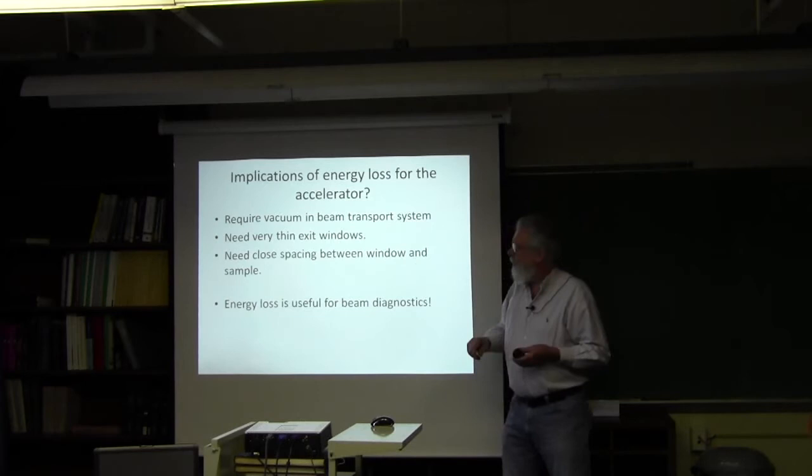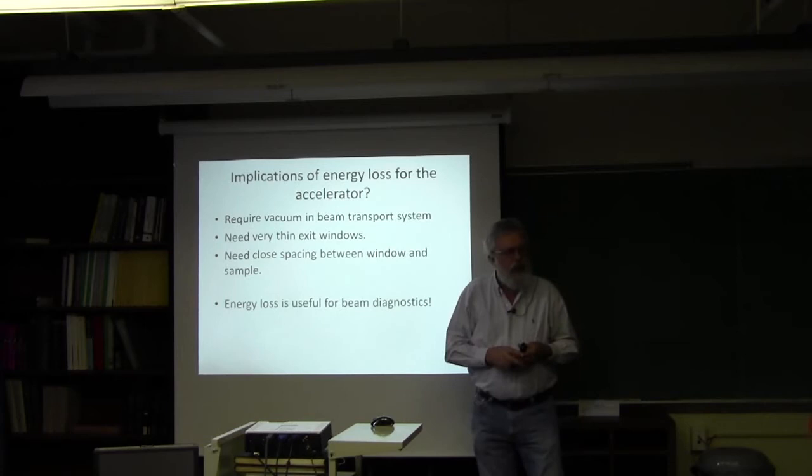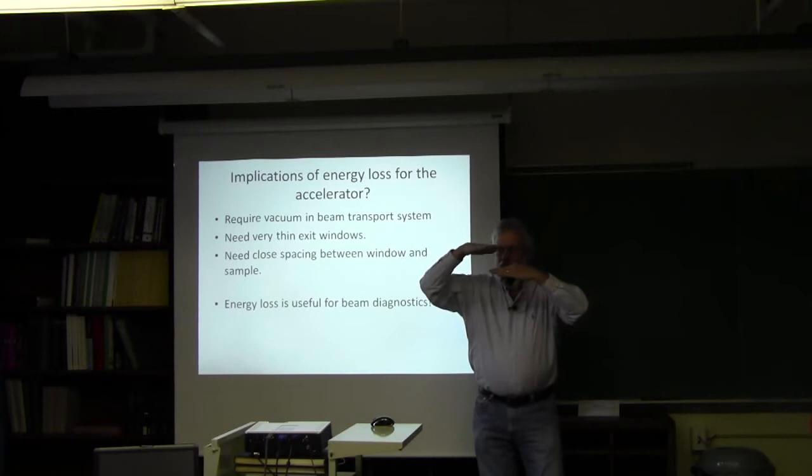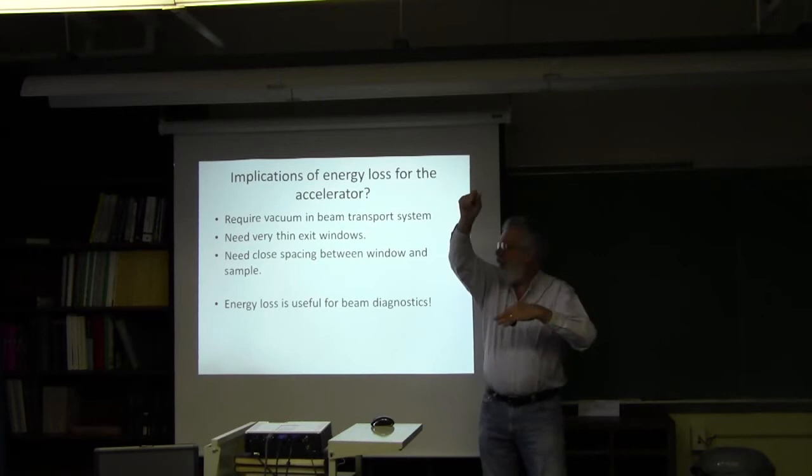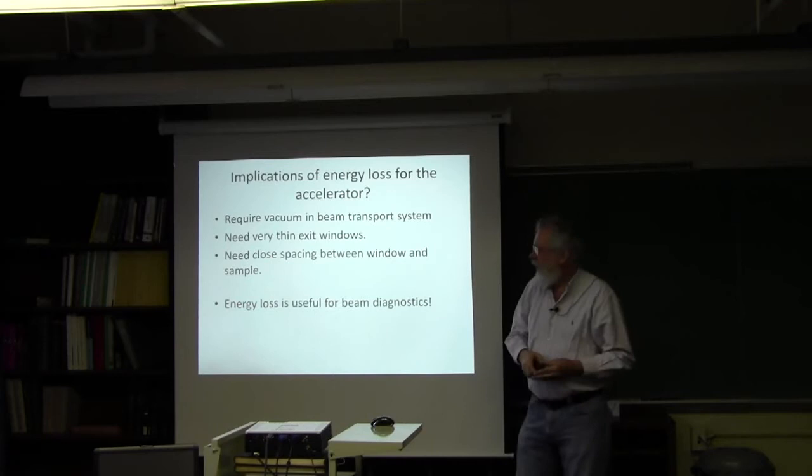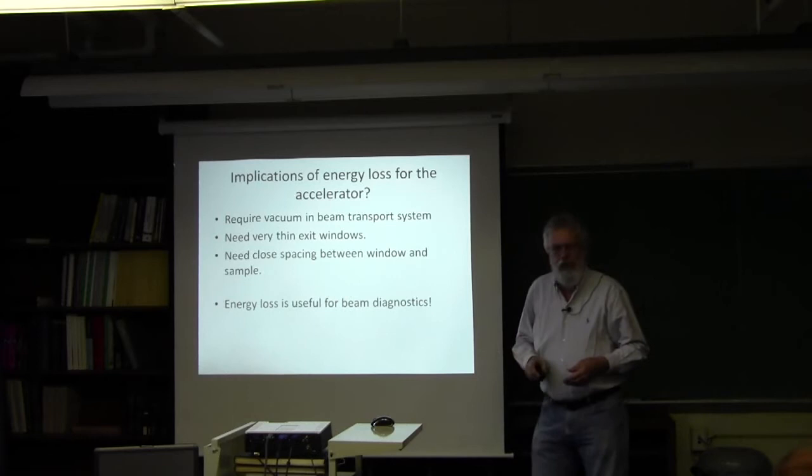You need a close spacing between the window and the sample, and this is related to the same factor. If you come through a window and go off at an angle, but your target is right there on top of it, it doesn't make any difference. Because your spacing, even though there's an angle, it doesn't give you much displacement. If you have a large distance between your window and your sample, this angle actually does contribute to the size of the spot. And so these things, the thin window and close spacing are some of the things you have to worry about when you're setting up a microbeam experiment. And of course, energy loss isn't totally useless. It's useful for beam diagnostics.